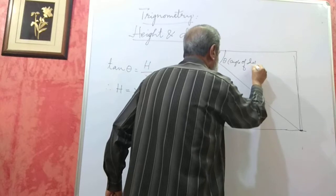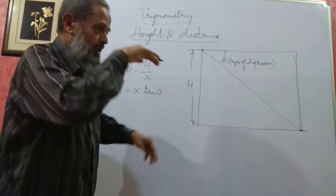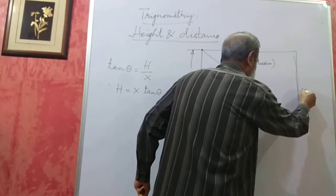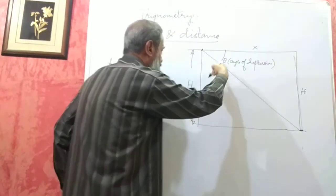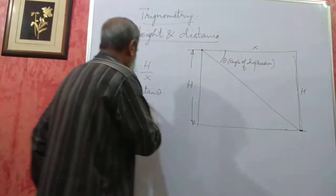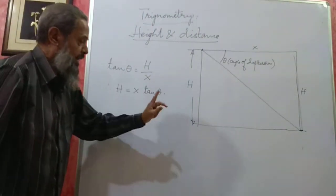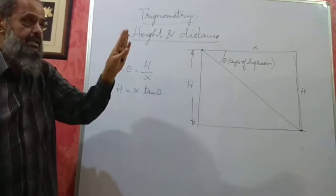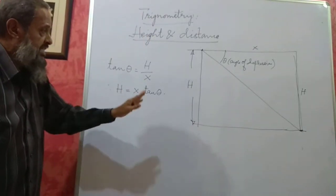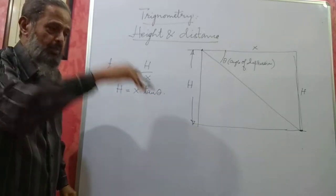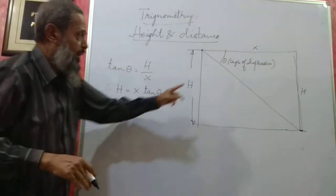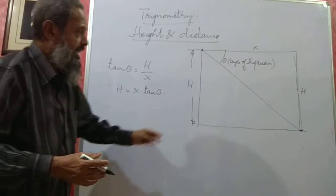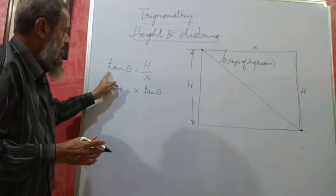If the observer is above and the object is below and the line of sight is bent downwards, that is called the angle of depression. If I know the angle of depression and the height h, I can get x. If I know h and theta, I can get x. So whether it is angle of elevation or angle of depression, we can get the distance if we know the height, or get the height if we know the distance, using the same relationship.